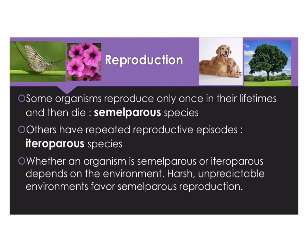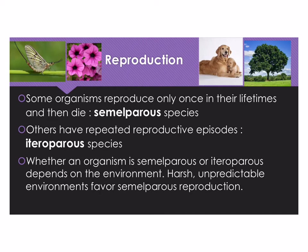A related strategy to think about has to do with whether organisms reproduce many times in their lifetime or only once. If they reproduce only once, this is called semelparous species. An example of this would be the mayfly — when it's time to reproduce, they reproduce, have their babies, and die. Also annual flowers such as petunias reproduce only once, and then they die.